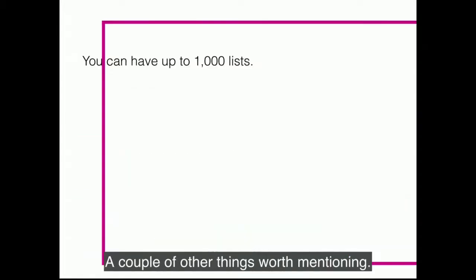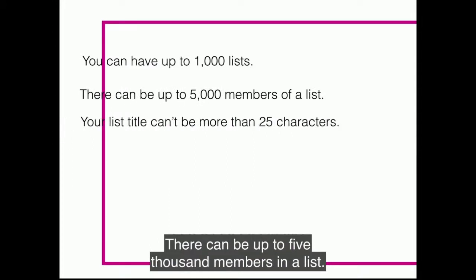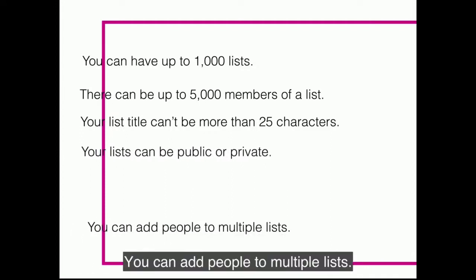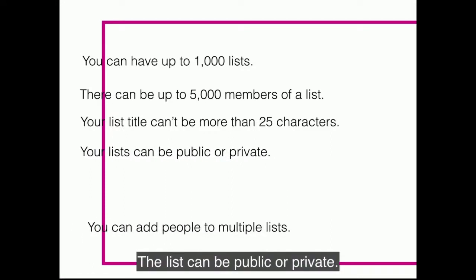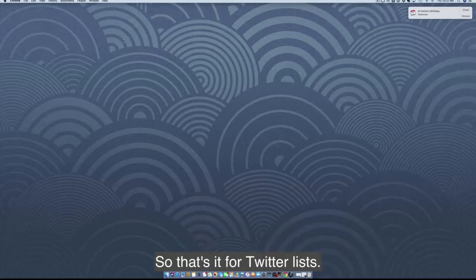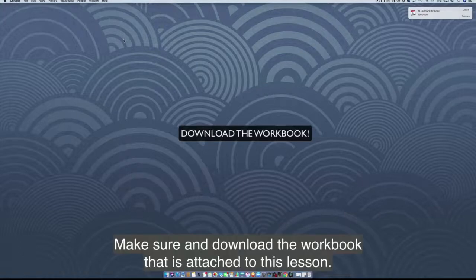A couple of other things worth mentioning: you can have up to 1,000 lists, there can be up to 5,000 members in a list, the list title can't be more than 25 characters, you can add people to multiple lists, and the list can be public or private — if public, the person will be notified. That's it for Twitter lists. I hope you found it helpful. Make sure to download the workbook attached to this lesson.